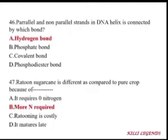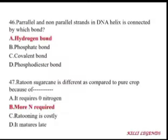Ratoon sugarcane is different from the pure crop. It grows from the left-out roots or seeds in the soil after harvest of the main sugarcane crop. Since the first crop already depleted nutrients, the ratoon crop demands more nutrient supply. Ratoon crops show more deficiency symptoms, including iron chlorosis, than the main crop, and generally require more nitrogen.